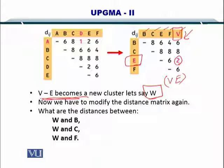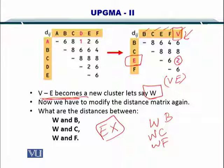Now we have to compute the distance between W and B, W and C, and W and F. Remember that E will be eliminated from the matrix and V will be eliminated from the matrix as well because they will be replaced by W.